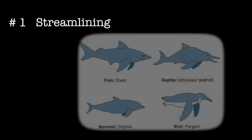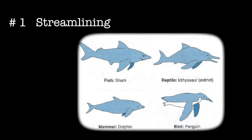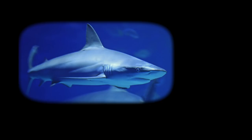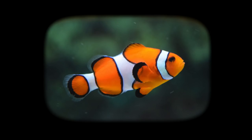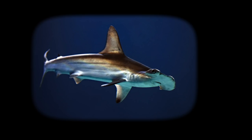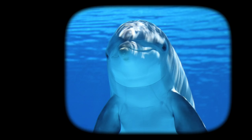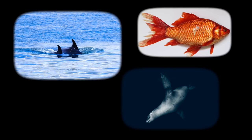Number one: streamlining. Many sea-dwelling creatures possess similar physical characteristics which help them survive in their similar environment. Sharks, dolphins, whales, and fish all possess a similar streamlined body equipped for aquatic maneuvering. All these species have dorsal fins which help them stabilize their bodies during swift motion and prevent them from tipping to either side. Despite their different evolutionary upbringings, all these species have developed similar characteristics from living in the same environment.